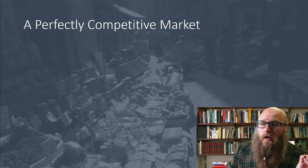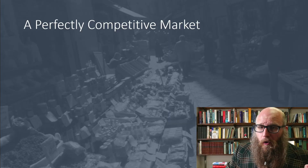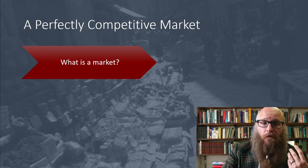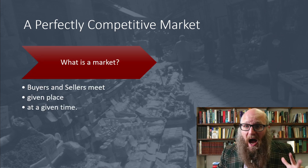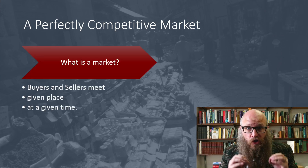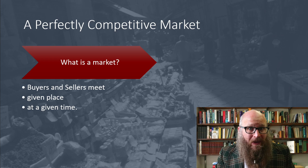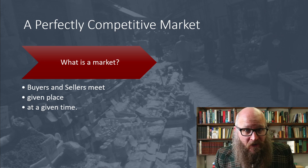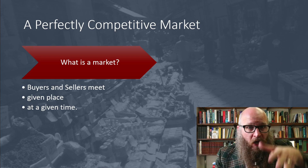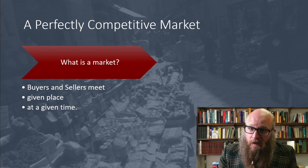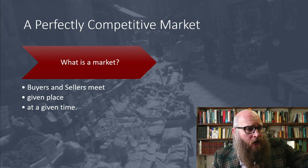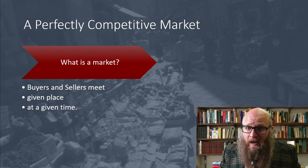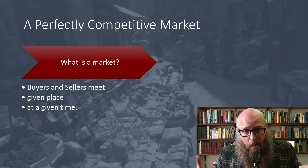For the purposes of this chapter, we are just going to explore a perfectly competitive market. So first we need to define what a market is — that's a place where both buyers and sellers show up, at a specific place and at a specific time. The market on the internet is different than the market at a store, or going to the movies at night versus a matinee are different markets.